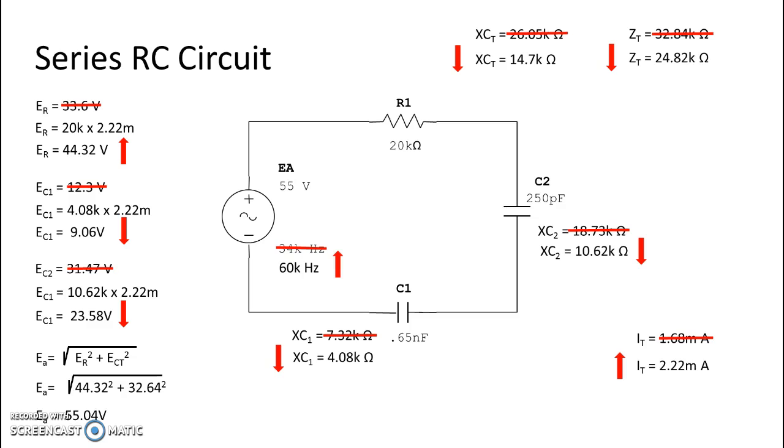And you can see on this particular rounding scenario, we actually came even closer than we did last time to our 55 volts, and we have 55.04 volts. All right, and that is frequency increasing in our series RC circuit.